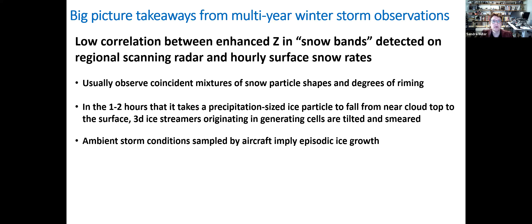I'm going to start off with where we're going to end up, which is a quite surprising finding: there's a low correlation between enhanced reflectivity in what we've been calling snow bands on regional radar and hourly surface snowfall rates. I'll give you evidence for this as well as the reasons why. The key reasons are that within the storm we're usually observing mixtures of snow particle shapes and degrees of riming, making interpretation and remote sensing retrievals quite difficult.